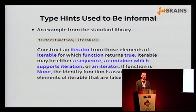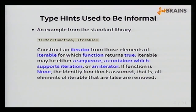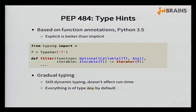Type hints in Python used to be informal. Python programmers would define type hints inside their docstrings, and those definitions were usually given in informal or natural language such as English. Here's a piece of documentation from the standard library about the filter function — the words highlighted in blue refer to type hints. PEP 484 defines their formal notation, which is much denser but much clearer.